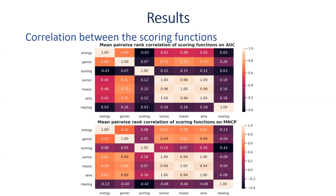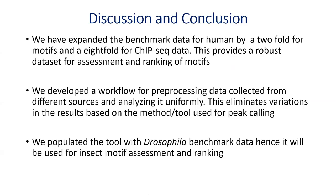In conclusion, we have expanded the benchmark datasets for human by a two-fold for motifs and an eight-fold for ChIP-seq data, meaning we have a more robust dataset for assessment and ranking of motifs for humans. We also developed a workflow for uniform processing of data from different sources, eliminating variations from different peak callers for the benchmark datasets. We also populated the tool with benchmark data for Drosophila, providing the first assessment tool for Drosophila insect data. We need to fine-tune it further to see how it works against all available transcription factors for Drosophila.